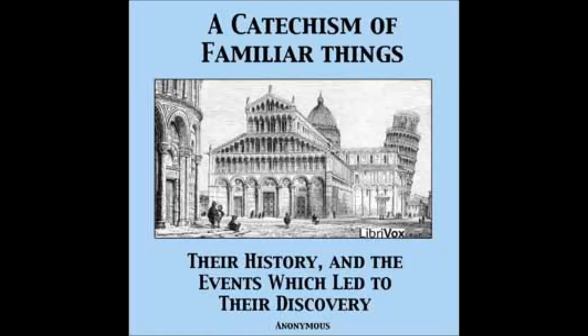What are the sources of currents? There are currents produced by chemical action, called voltaic currents; by the action of heat, or thermo-electric currents; by the motion of magnets, or magneto-electric currents. What is positive and what negative electricity? No difference in electricity itself. When a body has more than its natural amount of electricity, it is said to be charged positively. When it has less than its natural amount, it is negatively charged.